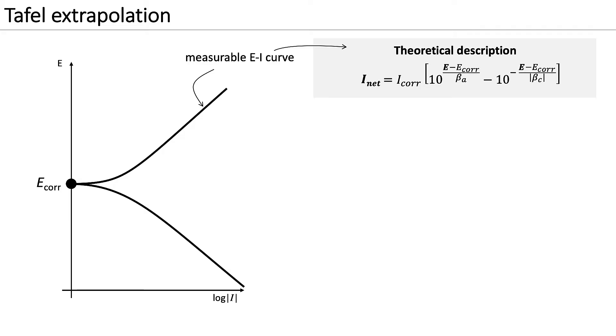Beta A and beta C are the Tafel slopes for the anodic and cathodic half-cell reactions, respectively. If we are sufficiently far from the corrosion potential along the anodic branch, we can neglect the second term, which describes the cathodic current. This is because the influence of the cathodic reaction becomes negligible.